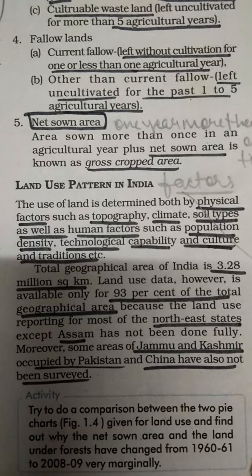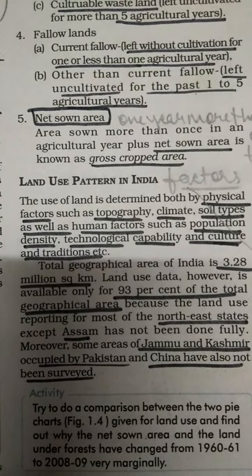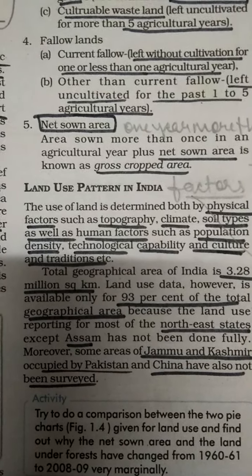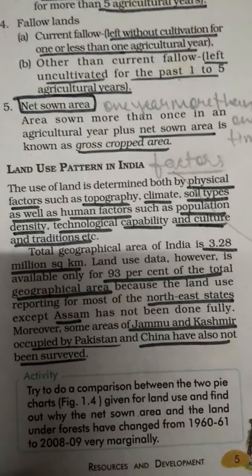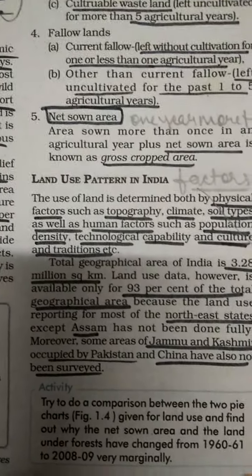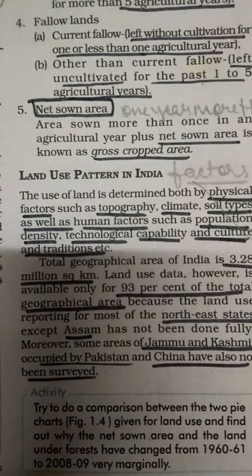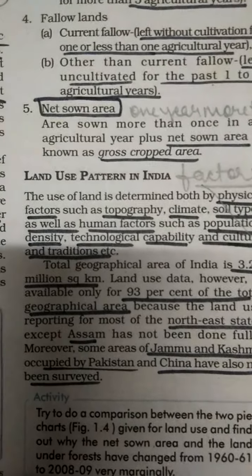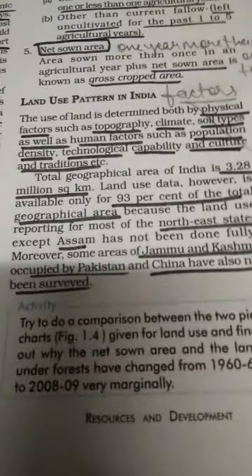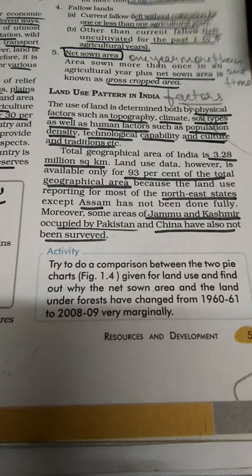Land use reporting for most northeastern states — except Assam — has not been fully completed. States like Arunachal Pradesh, Sikkim, Mizoram, and Manipur are largely mountainous — the Purvianchal region — and land there is not extensively used for agriculture or industries. Assam has some more developed land use, but overall the northeastern region has limited land development.